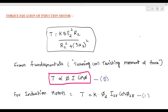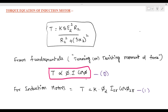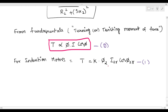From fundamentals, torque is defined as the turning effect or twisting moment of force, which is called torque. The fundamental torque formula is: T is proportional to φ·i·cosφ₂. For an induction motor, similarly: T equals k·φ₂·i₂r·cosφ₂r.